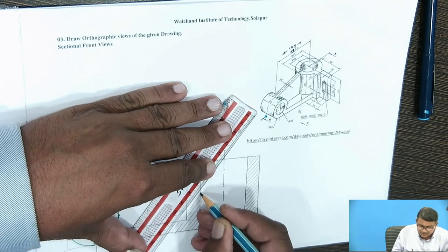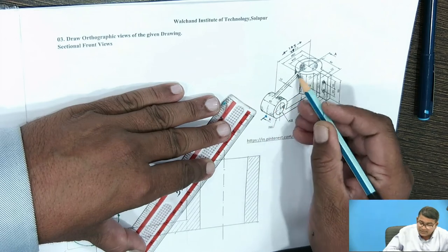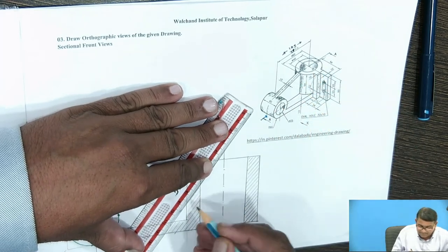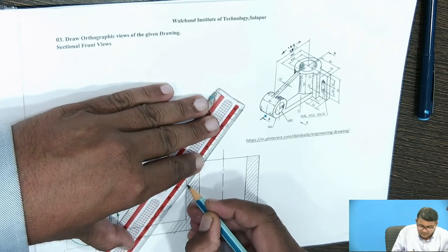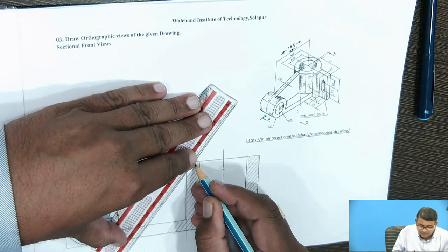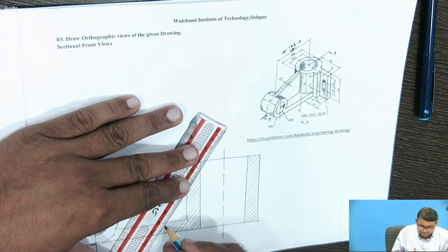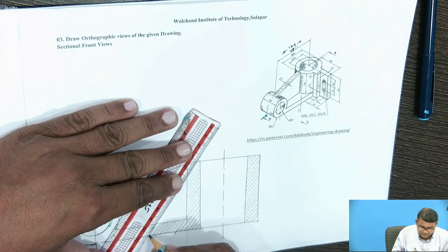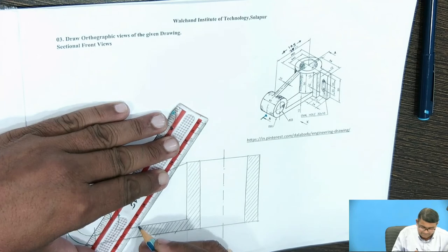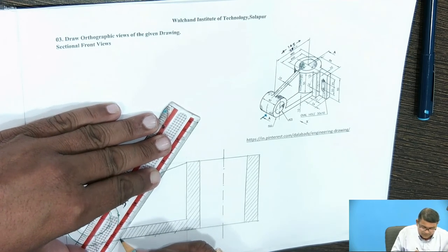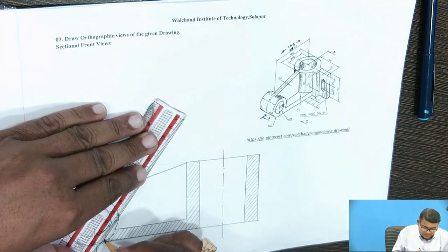That cutting plane — you have to mention where the section starts and where the section ends. Here it is shown that it starts here at AA and ends up to here. And this circular part — that surface also you have to see in it; this circular part also has a section.